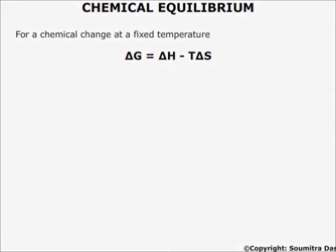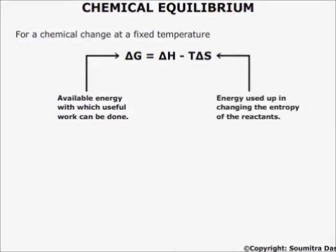What I did not tell you is that ΔG, the free energy change in a chemical reaction, is actually the available energy with which you can do some useful work. And TΔS is the energy used in changing the entropy of the reactants. This energy cannot be used, so when we subtract this energy from the energy of reaction, that is ΔH, we get the free energy.